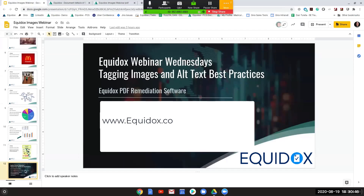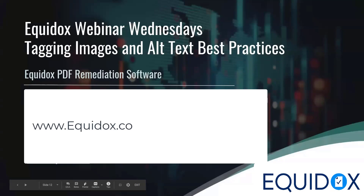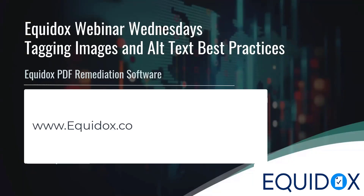Someone asked a question about hyperlinks attached to images. Ryan already answered in the chat: a link zone can be wrapped around an image or figure to create a hyperlinked image. The output will contain a link tag which contains the image with alt text nested inside it. This allows both the image's alt text and the link destination or link alternative text — if you included that — to be read, instead of choosing one or the other.